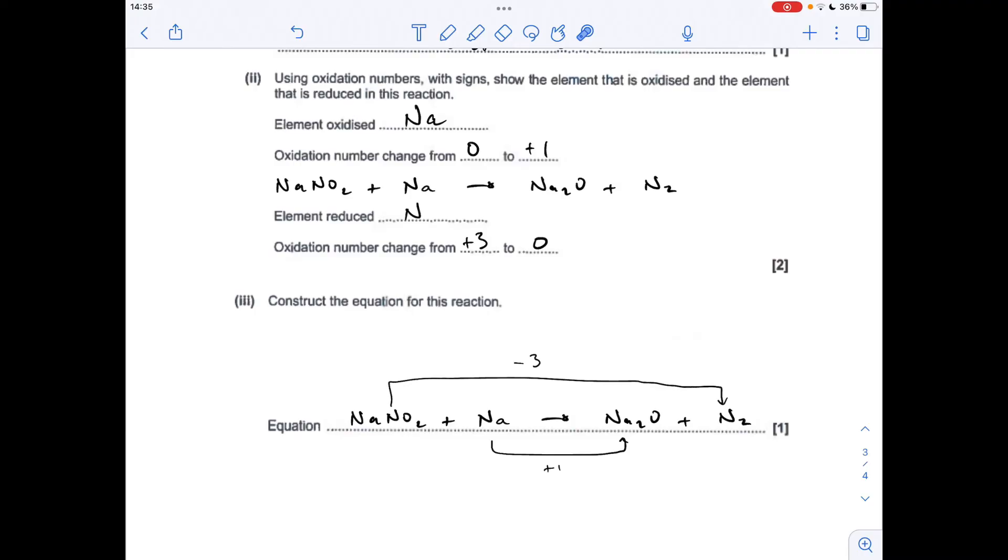So moving on to the final part of the question. We've got to construct the balanced equation for the reaction. I think it's a bit mean only awarding one mark for this, but there you go. So you'll notice I've got the unbalanced equation and I've got the change in oxidation number. So the sodium's gone up by 1, the nitrogen's gone down by 3. And the rule is the changes in oxidation number have to be equal. So the first thing I'm going to do is put a 2 in front of the NaNO2. So that now means that I've got two nitrogens to balance those two there.